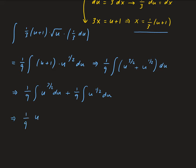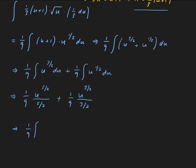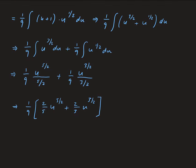Taking the integral now: we add 1 to the exponent three halves to get five halves, divided by five halves, plus one ninth times u to the three halves divided by three halves. Factoring out one ninth gives us two fifths times u to the five halves plus two thirds times u to the three halves. Redistributing the one ninth gives 2 over 45 times u to the five halves, plus 2 over 27 times u to the three halves.